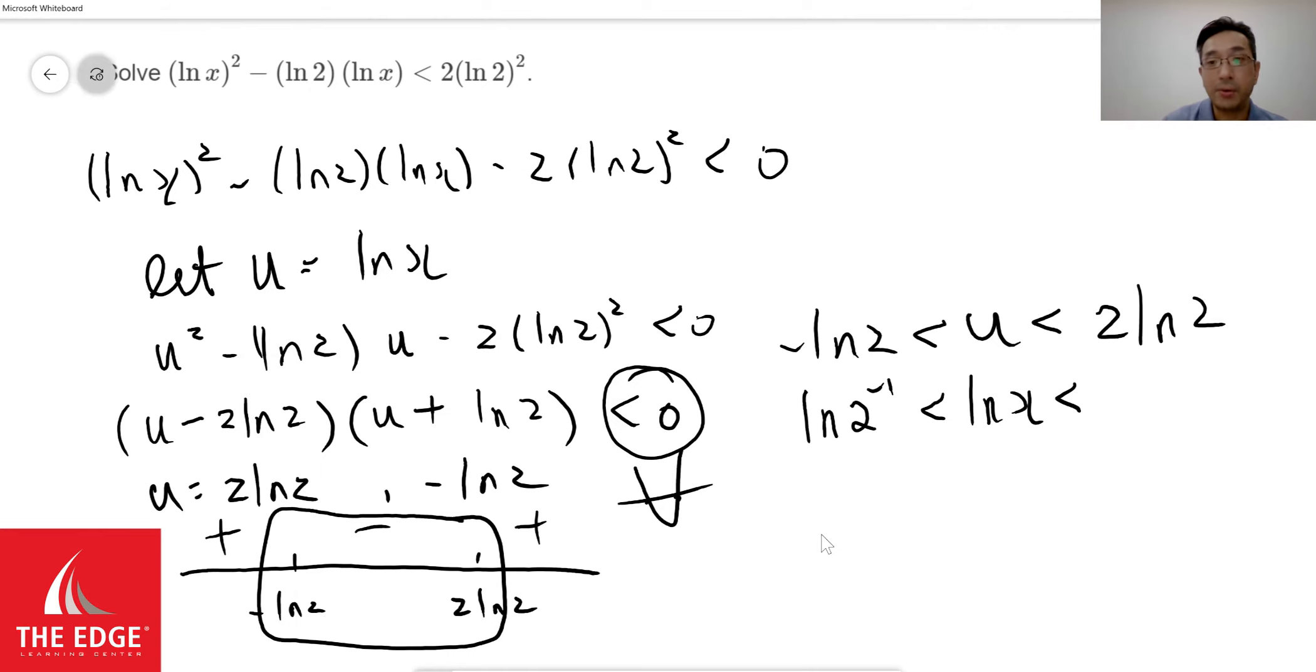Since everything is being ln, in a sense, we can kind of cross off all the ln at this point. And we can now write 2 to the negative 1 power which is 1 half, and then x, and finally 2 squared is 4. So this is the final solution.